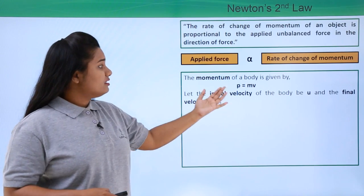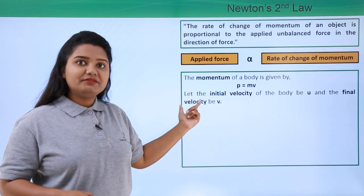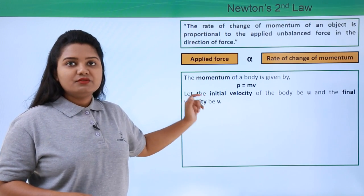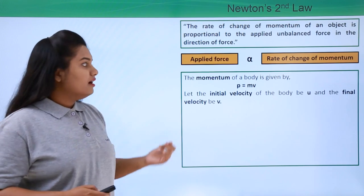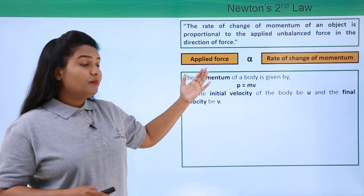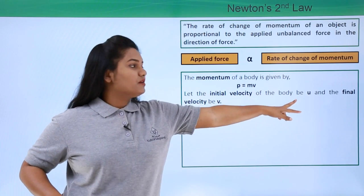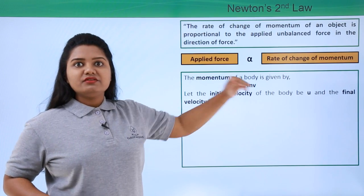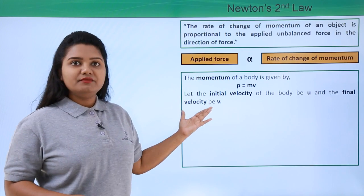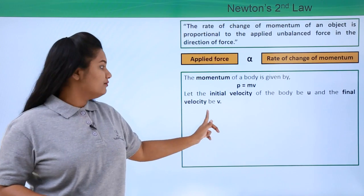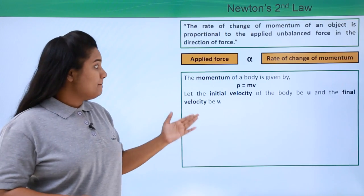The initial velocity will be taken as u and the final velocity as v. So the initial momentum that the body had will be mass into the initial velocity, which is mu, and the final momentum of the body will depend upon the final velocity v, which will be mv.